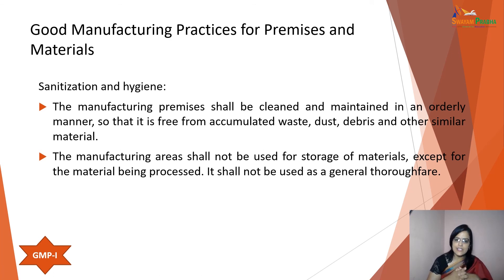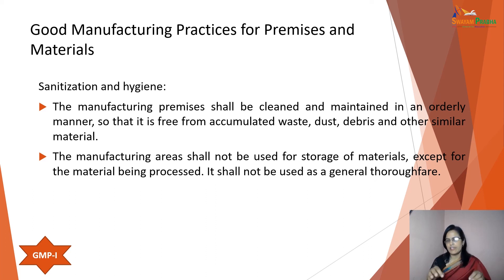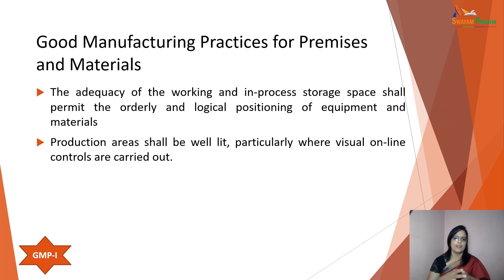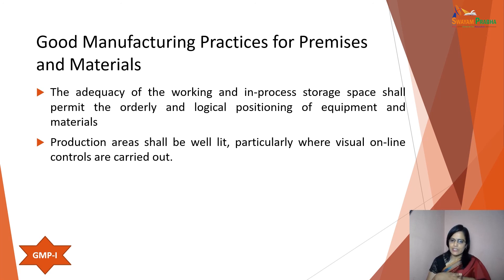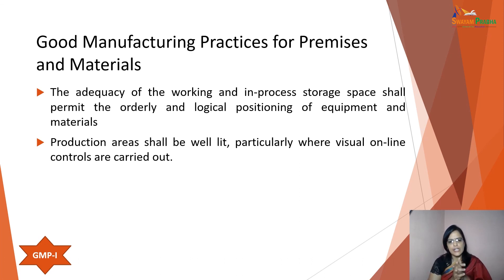Sanitization and hygiene: the manufacturing premises shall be clean and maintained in an orderly manner, free from accumulated waste, dust, debris and similar material. The manufacturing area shall not be used for storage of material except for material currently being processed. The adequacy of working and in-process storage space shall permit orderly and logical positioning of equipment and materials to minimize the risk of mix-up and cross-contamination. Production areas shall be well lit, particularly where visual in-line controls are carried out.